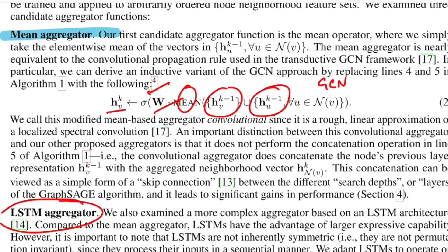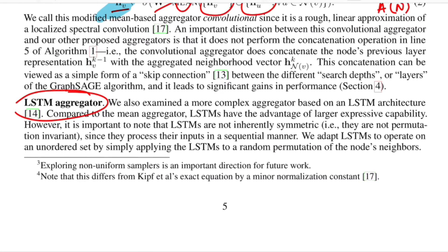In the mean aggregator, the contribution from neighboring nodes and the node itself is equally weighted. One note: here we directly get the representation for that node at the k-th step, unlike the pseudo-algorithm where we concatenated h_v^(k-1) with the aggregated neighborhood. The second aggregator is called the LSTM aggregator. Since the aggregator should be order invariant but LSTMs are sequential and inherently capture temporal patterns, to adapt LSTMs to operate on this unordered set they train LSTMs by feeding random permutations of the neighboring nodes, forcing the LSTM to be symmetric.